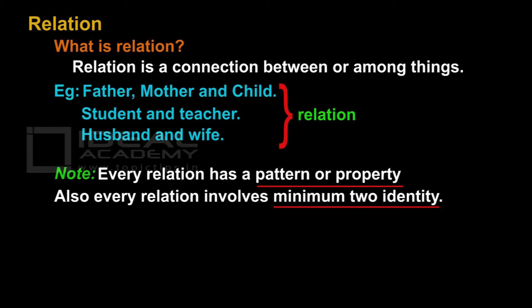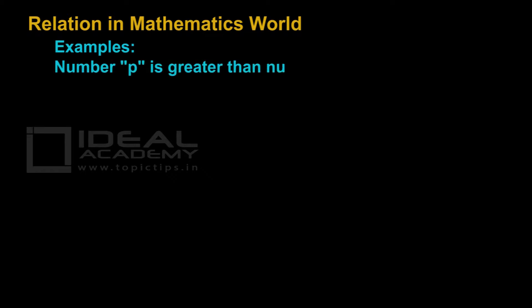Now let us see what relation means in the mathematical world. If we say number P is greater than Q, it is a relationship because it has more than one identity and also there is a pattern — all the numbers where P is greater than Q. For example, 5 is greater than 4, so 5 is part of P and 4 is part of Q.